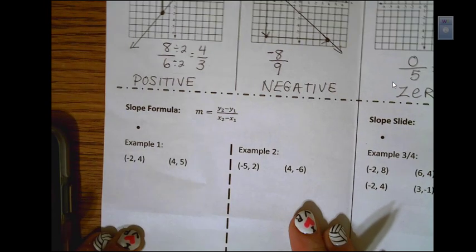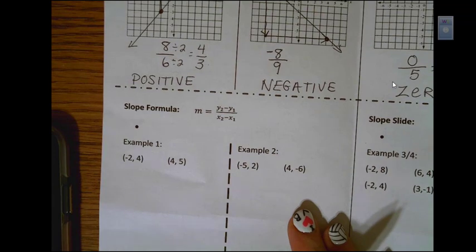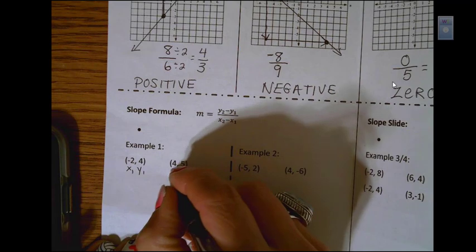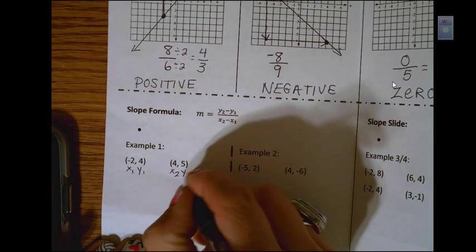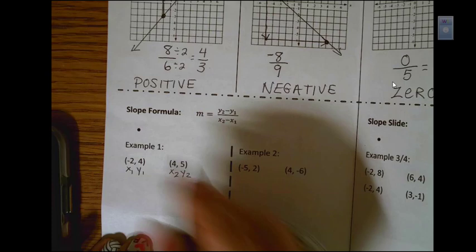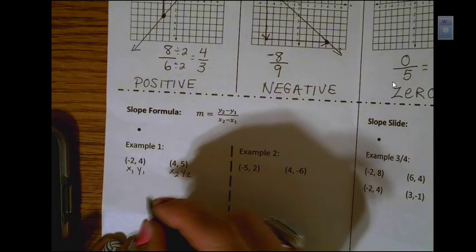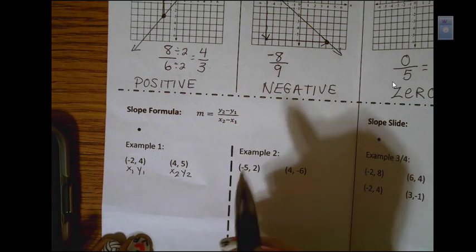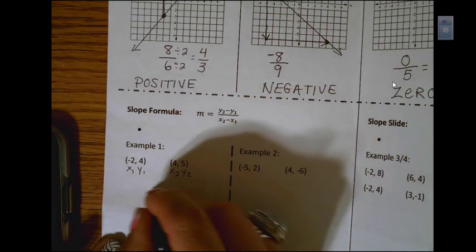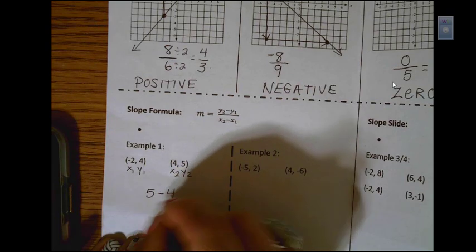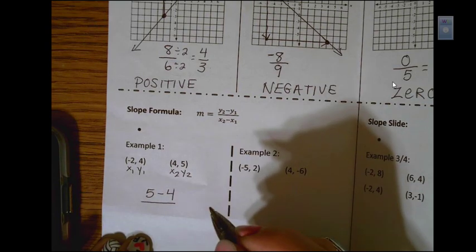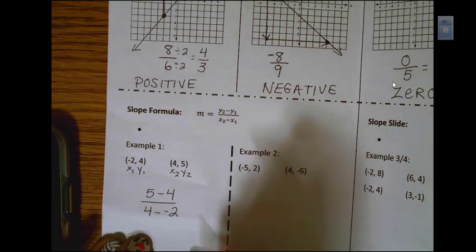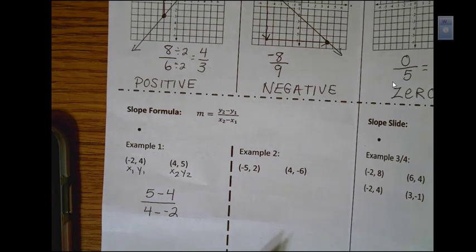So on the left-hand side we have example one. I'm going to label this x1, y1, x2, y2 for our second ordered pair. Here's the formula, y2 minus y1 over x2 minus x1. So it's just a matter of substituting in. 5 minus 4 over 4 minus a negative 2. So make sure you're real careful as you're substituting in.